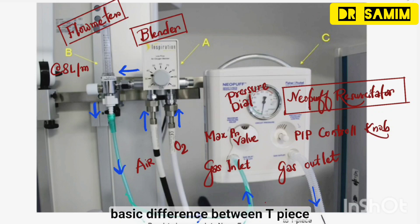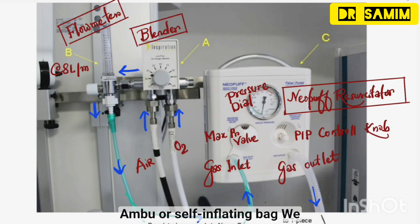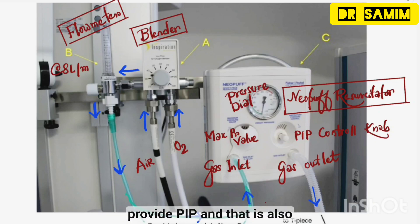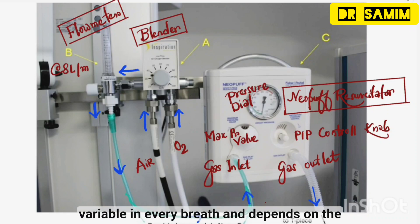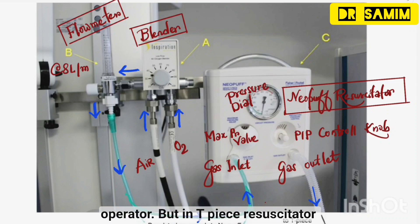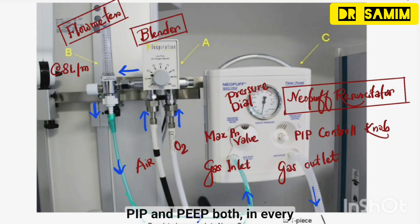What is the basic difference between the TPS resuscitator and AMBU? In AMBU, or self-inflating bag, we cannot provide PEEP — only PIP, and that is also variable in every breath and depends on the operator. But in the TPS resuscitator, we can provide preset PIP and PEEP both in every breath, so there is less injury to the airway.